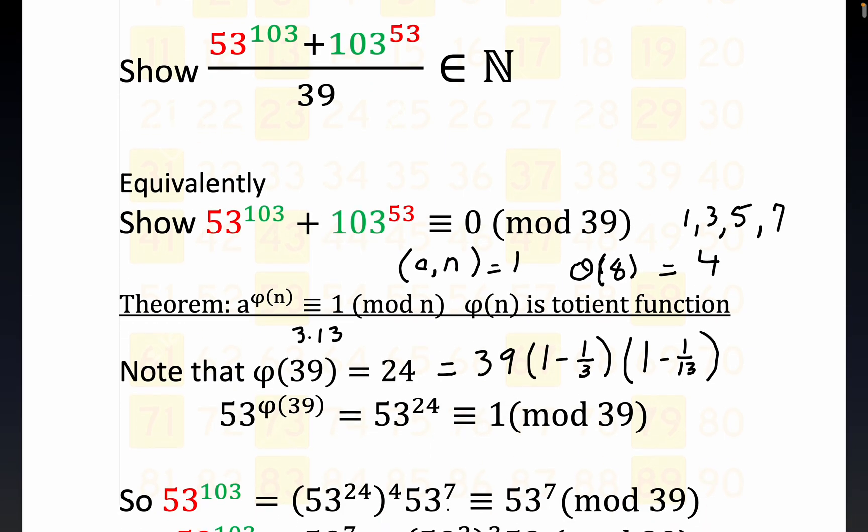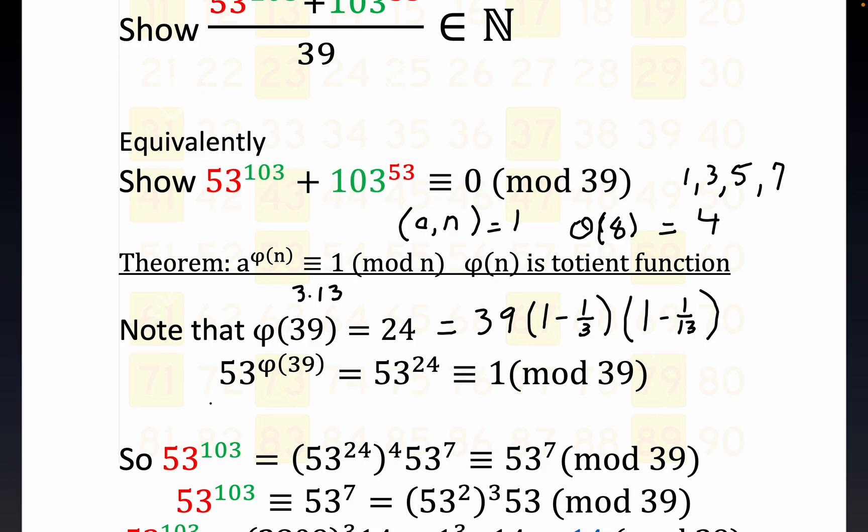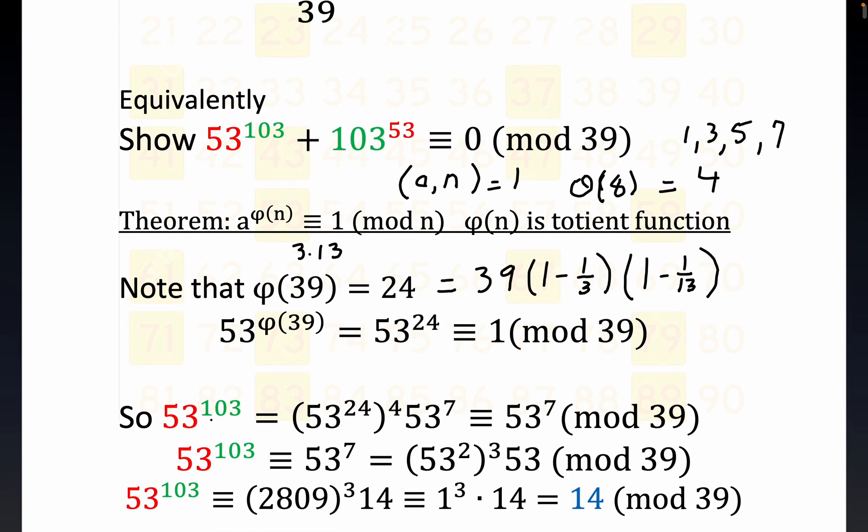So now we know that 53 raised to the φ of 39 is the same as 53 to the 24th, and that's congruent to 1 mod 39. We're going to use that result to work with this very first term right here. And y'all notice this is just all laws of exponents. So since we know that 53 to the 24th is congruent to 1, it makes sense to do this. 4 times 24, or 24 times 4 is 96. And then 96 plus 7 is this 103.